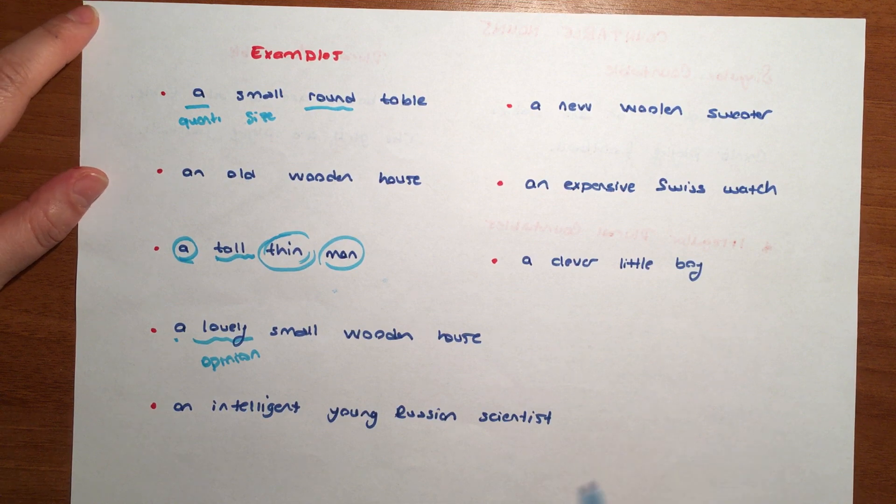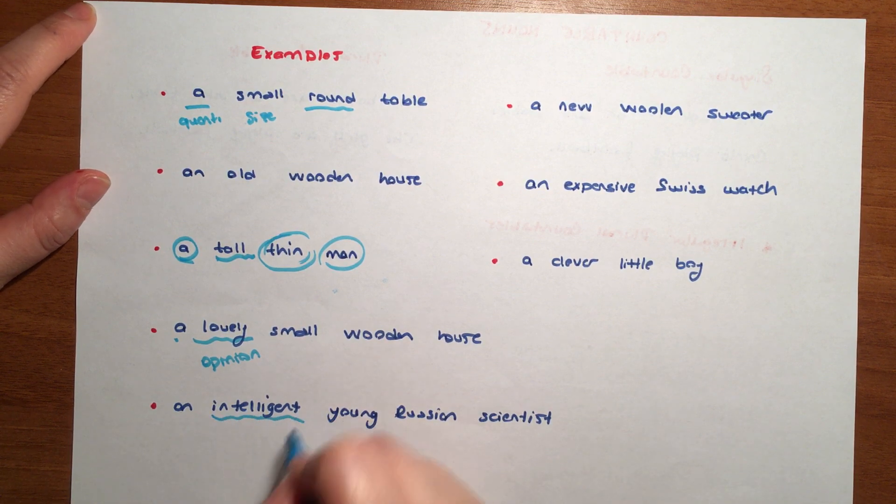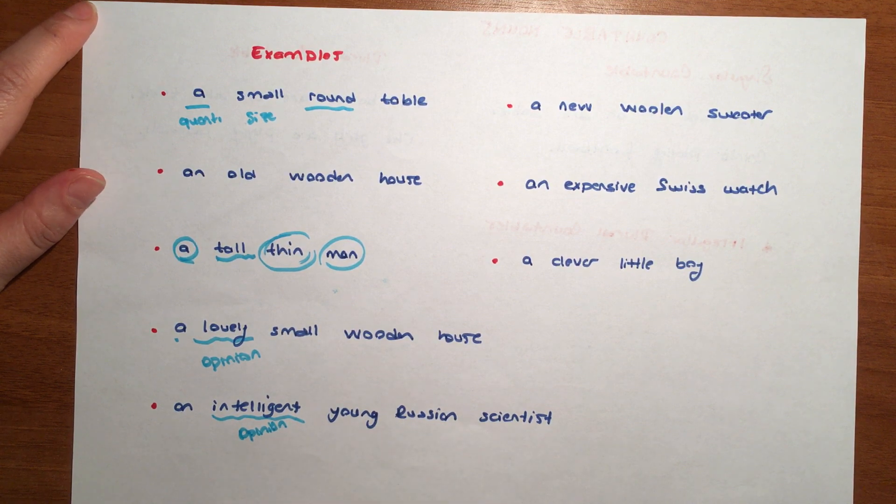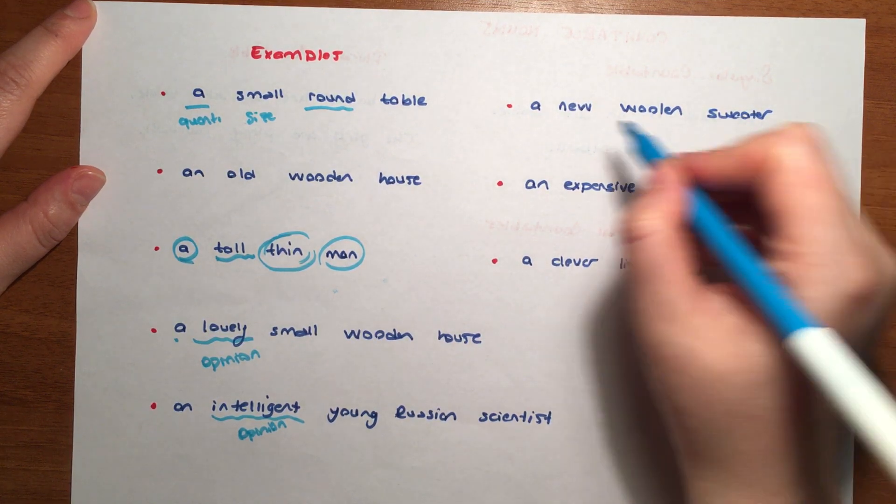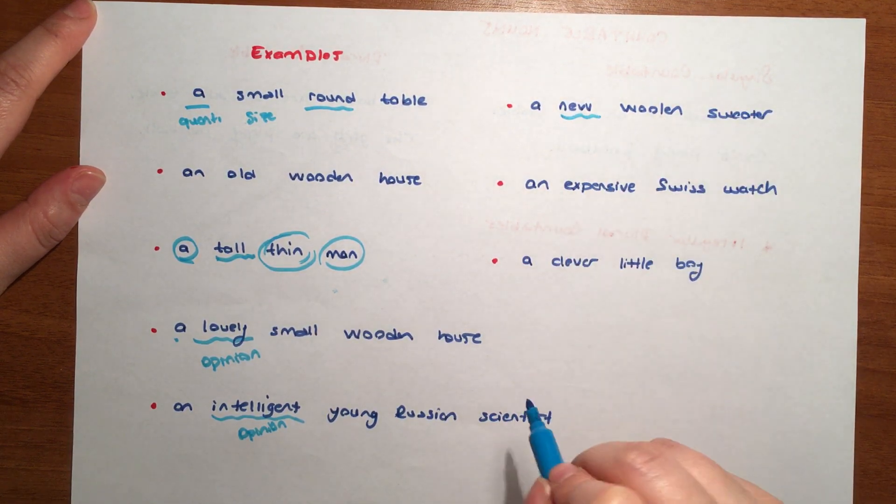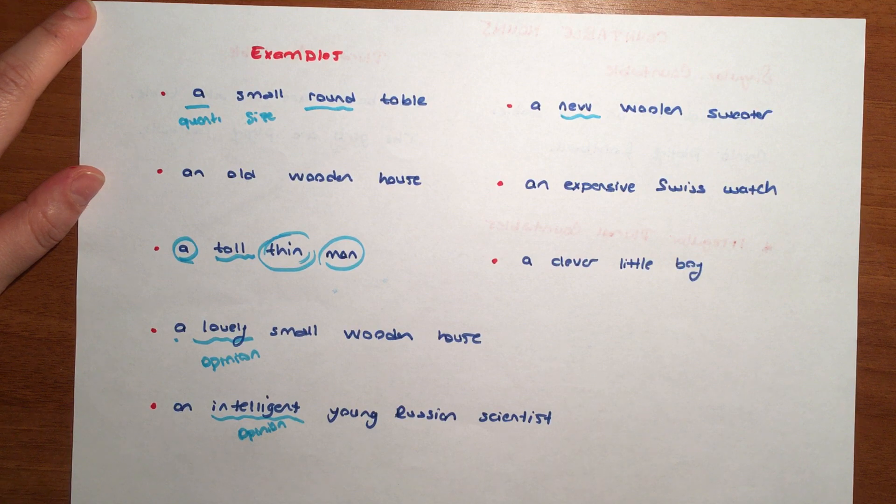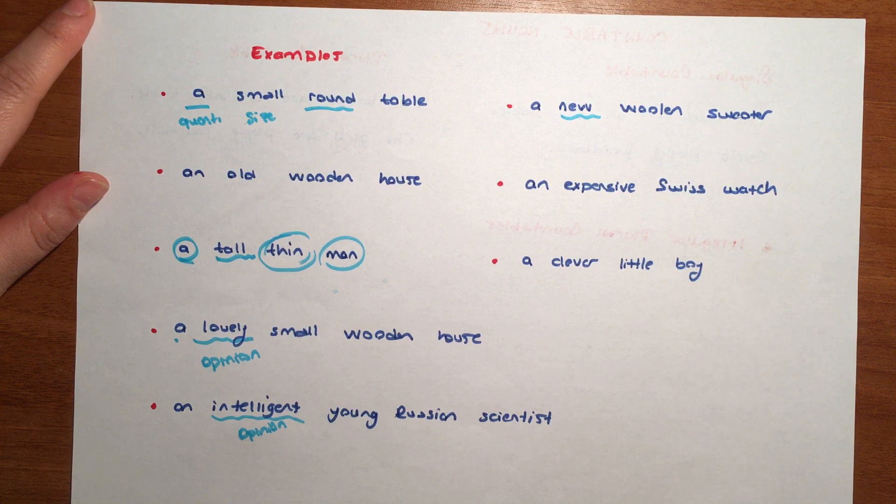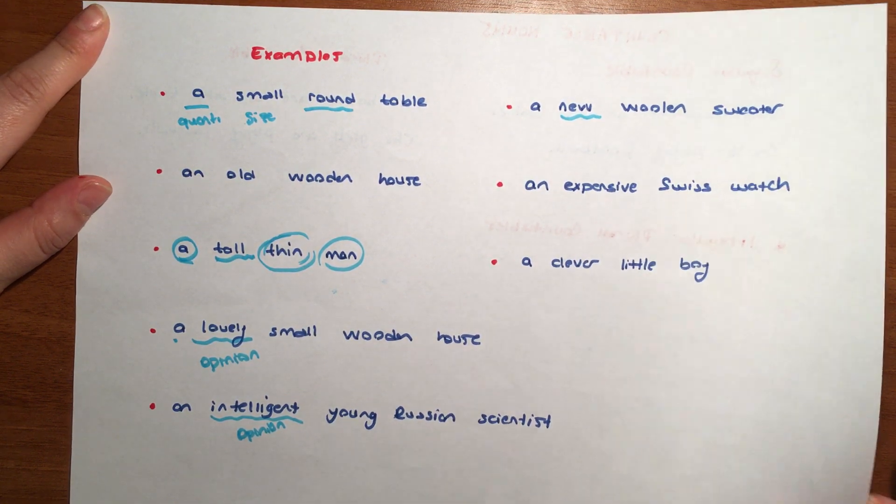An intelligent young Russian scientist. Here intelligent is again what? Opinion. We always use opinion in first position, if there is one of course. A new woolen sweater - new, wool sweater. An expensive Swiss watch. A clever little boy. These are also our examples.